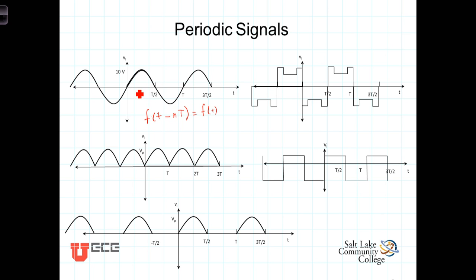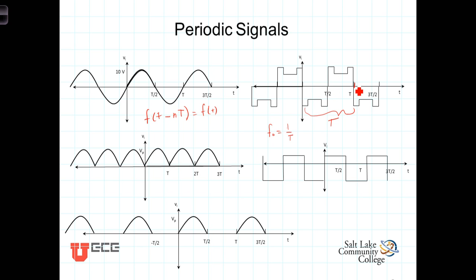Now, it's pretty obvious that a sinusoid is periodic and consists of a single sinusoid. But what Fourier was saying is that any arbitrary periodic signal of fundamental period T can be thought of as an infinite sum of sinusoids added together, where the frequencies of those sinusoids are integer multiples of the fundamental frequency. The fundamental frequency f0 equals 1 over T, and in radians per second, ω0 equals 2π over T.